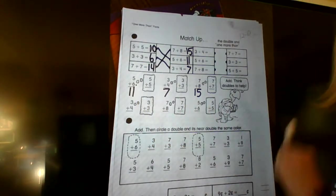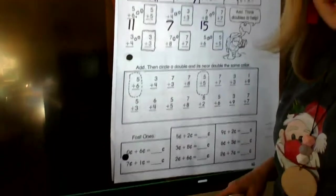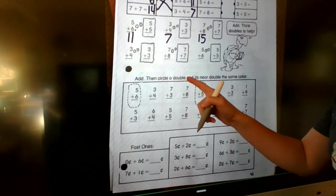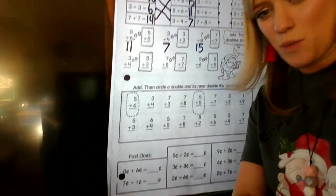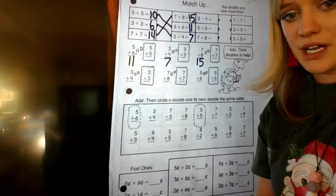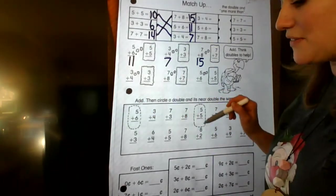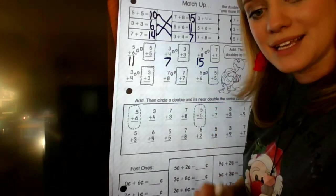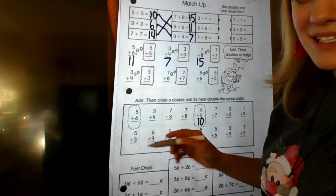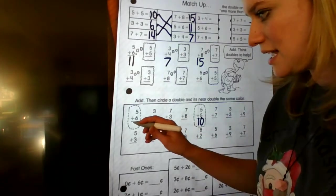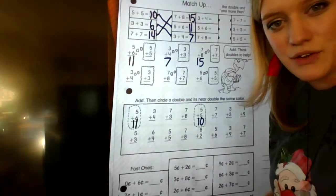Alright, you try the bottom 3. We did the top 3 together. The bottom 3, or the bottom section here in this box, tells you to add these together and then to circle the double and the one that is one more in the same color. You can do this if you want to in the same color, but you're going to have to have a lot of different colors. But what you would do is, so see how they did 5 plus 6? They circled 5 plus 5 and 5 plus 6 in the same color because that's the double plus 1. So 5 plus 5 we know is 10. 5 plus 6, well, think of my double. 5 plus 5 is 10, plus one more is 11.